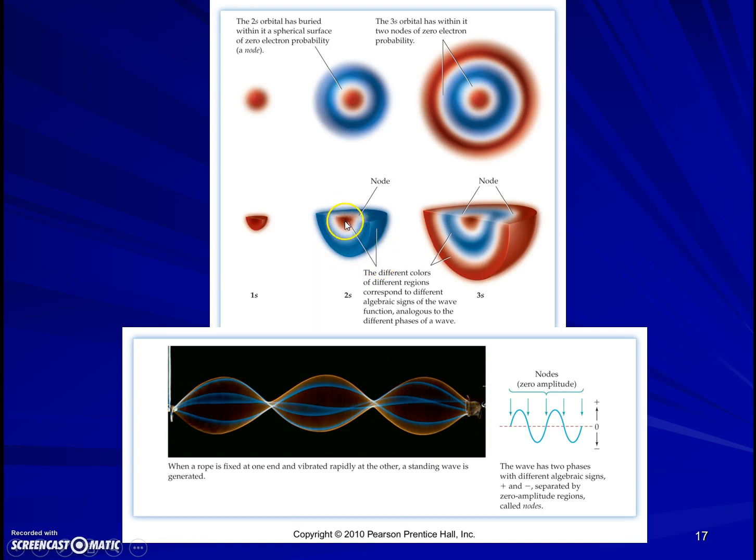So for example, if we look at the 2s electron, we could think of the red section as the part of the sine wave that's above the x-axis, the white as being a node, a place where it crosses the x-axis, and the blue being a place where we're below the x-axis. Now remember, the probability of finding an electron in a particular spot is the square of the wave function. So that means that the 2s electron can be here in the red zone, or it can be here in the blue zone. But it can't be in this white area, this white sphere, because the wave function is zero there, so the square of the wave function is zero there.